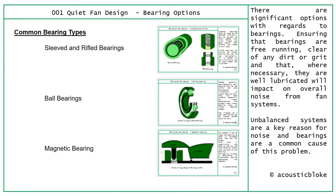Having looked at blades and stators, let's look at bearing options. There are significant options with regards to bearings: ensuring that bearings are running free, clear of any duct or grit, and that where necessary they're well lubricated, will impact on overall noise from any fan system. Maintenance of a bearing is paramount in order to control bearing noise.